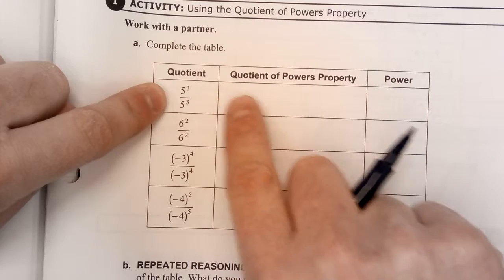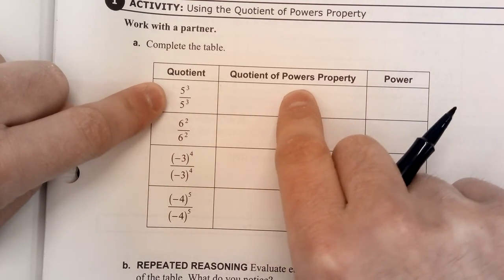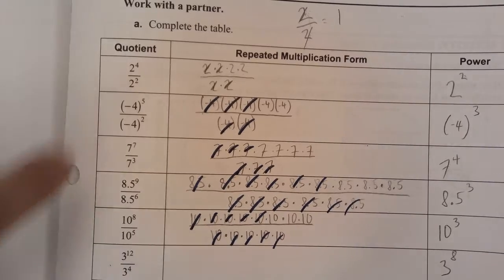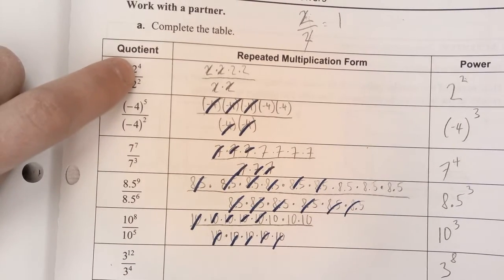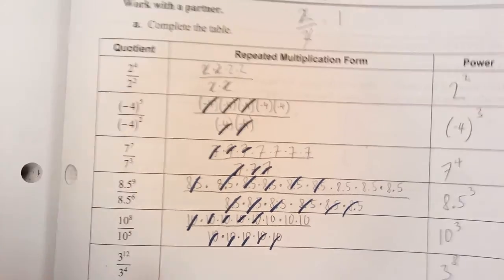I could rewrite this quotient of powers property. So the quotient property, which we did in 10.3, reminder, looks like this, and we learned that the quotient rule is if there's a common base and you're dividing powers, then you get to subtract the exponents. So,